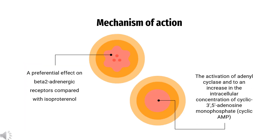Mechanism of Action: Formoterol is a relatively selective long-acting agonist of beta-2 adrenergic receptors, although it does carry some degree of activity at beta-1 and beta-3 receptors. Beta-2 receptors are found predominantly in bronchial smooth muscle, whereas beta-1 receptors are the predominant adrenergic receptors found in the heart. Selectivity for beta-2 receptors is therefore desirable in the treatment of pulmonary diseases such as COPD and asthma. Formoterol has demonstrated approximately 200-fold greater activity at beta-2 receptors over beta-1 receptors. On a molecular level, activation of beta receptors by agonists like Formoterol stimulates intracellular adenylyl cyclase, an enzyme responsible for the conversion of ATP to cyclic AMP (cAMP).